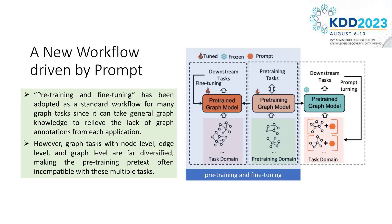However, traditional supervised learning methods on graphs heavily rely on graph labels, which are not always sufficient in the real world. To solve this problem, many studies have turned to pre-training and fine-tuning. Unfortunately, there still exists a huge gap between these pretexts and multiple downstream tasks.